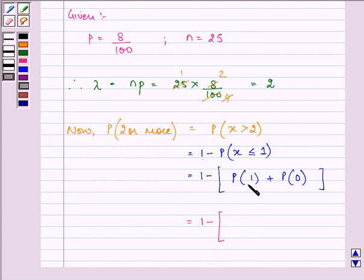Probability of 1 can be written as 2 raised to the power 1 into e raised to the power minus 2 upon 1 factorial.